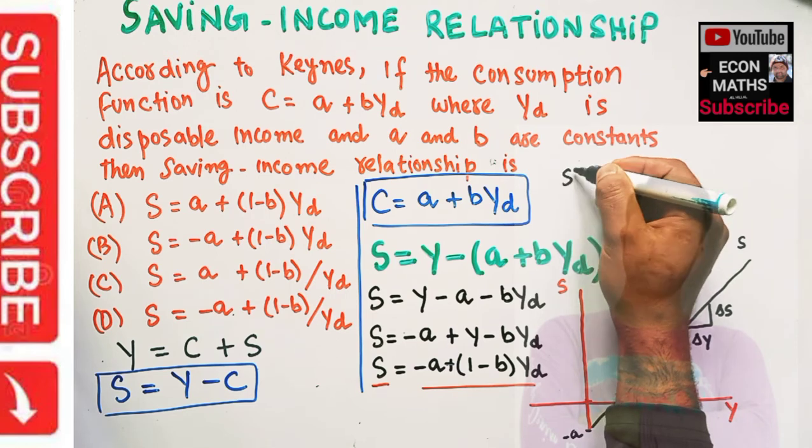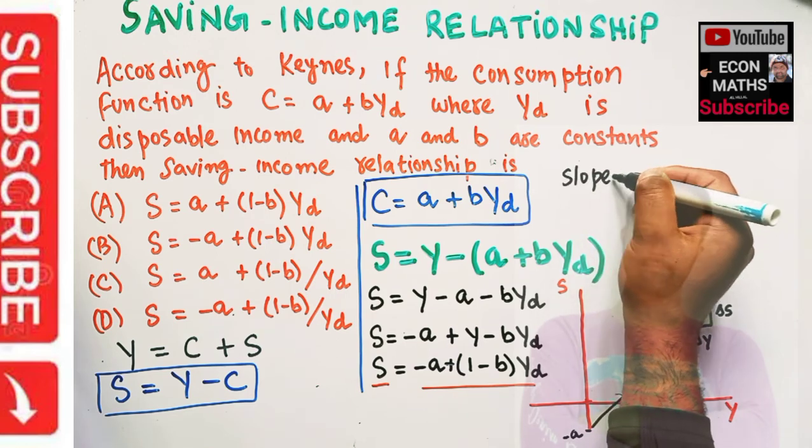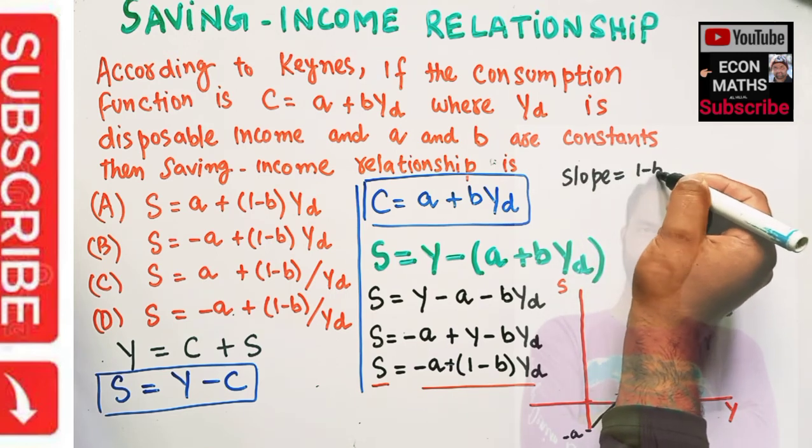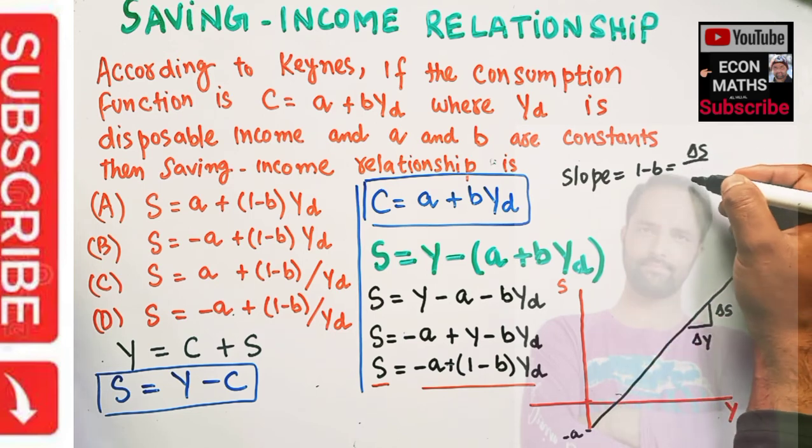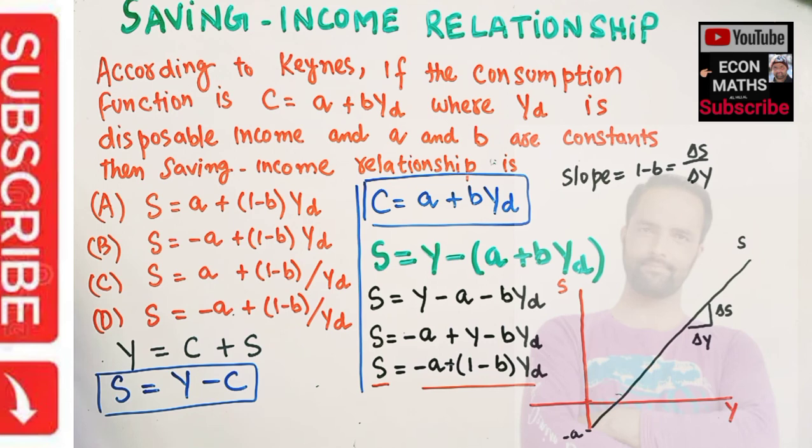And this slope is equal to 1 - B, which is equal to ΔS/ΔY.